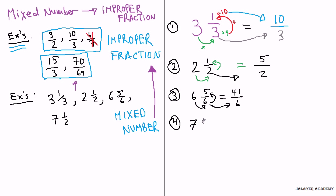7 and one half. 7 times 2 is 14 plus 1 is 15 over the original denominator, which is 2. So, we get 15 over 2.